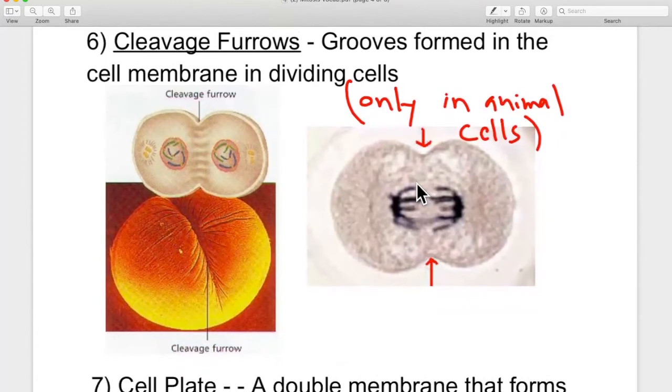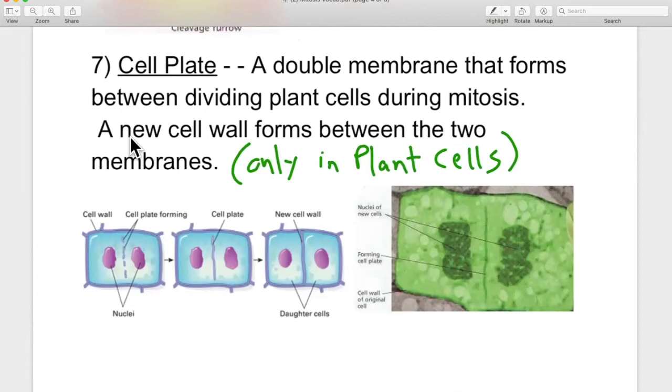This is what animal cells do. Plant cells do it differently because they have something we don't have. That's right, a cell wall, which is made of cellulose. Wait, what's cellulose? Did we talk about that? Plant cells are surrounded by wood. That's what cellulose is and that's what the cell wall is made out of. So wood is not going to bend in without breaking. So they're going to do things differently. They create what's called a cell plate. A double membrane that forms between dividing plant cells during mitosis. A new cell wall forms between the two membranes.